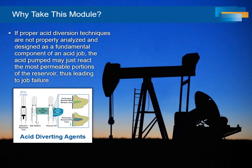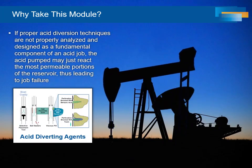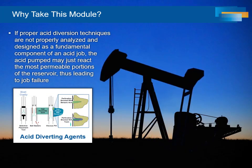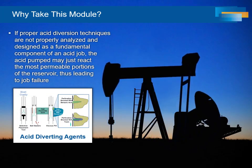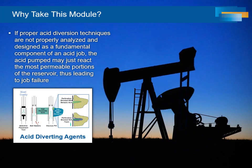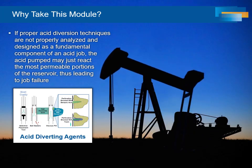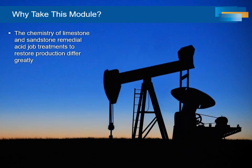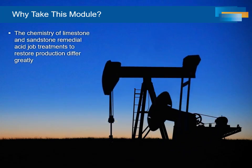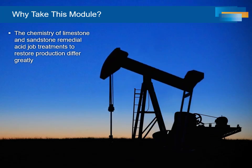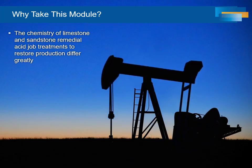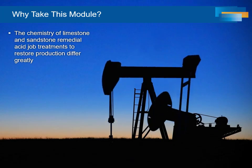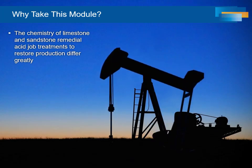If proper acid diversion techniques are not properly analyzed and designed as a fundamental component of an acid job, the acid pumped may just react the most permeable portions of the reservoir, thus leading to job failure. The chemistry of limestone and sandstone remedial acid job treatments to restore production differ greatly. Proper rock mineralogy identification and lab testing with acid processes is mandatory in restoring lost production.